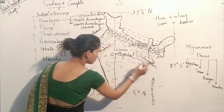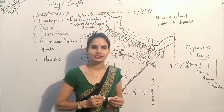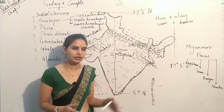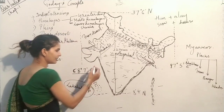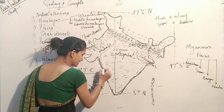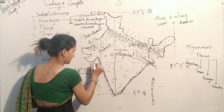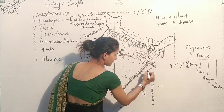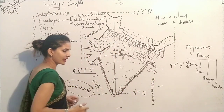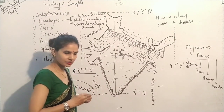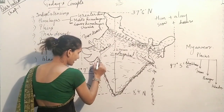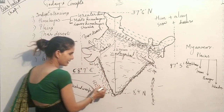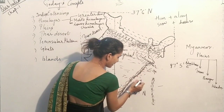Next are the Ghats. Ghats are the land parts which separate the ocean from the continental land. We have two ghats: in the west we have the Western Ghats, and in the east we have the Eastern Ghats. Along and parallel to these ghats we have coastal plains. On the west side we have the Western Coastal Plain, and on the east side we have the Eastern Coastal Plain.